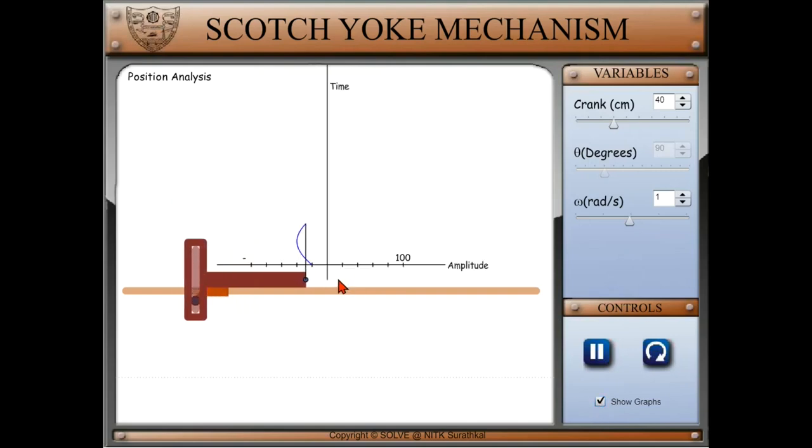Check this box and observe that the graph is plotted dynamically. Move the input sliders, i.e. Crank and Angular Input Speed Omega, and notice the changes in the Amplitude Time Graph.